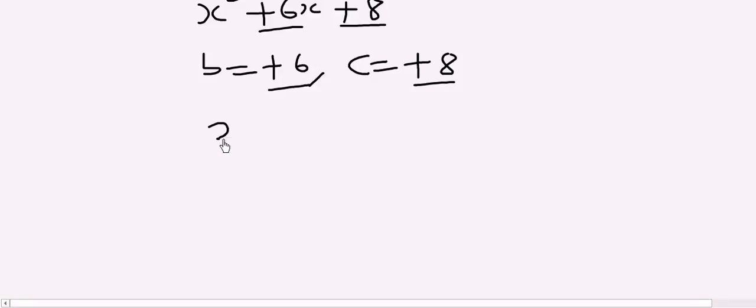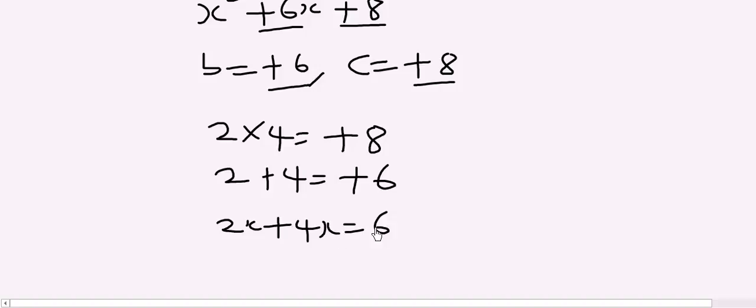So that 2 times 4 equals 8 and 2 plus 4 equals 6. So we can say 2x plus 4x equals 6x.